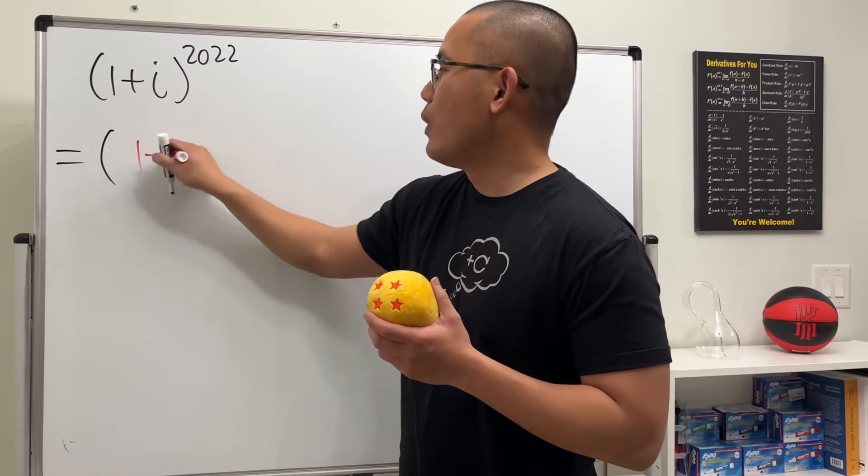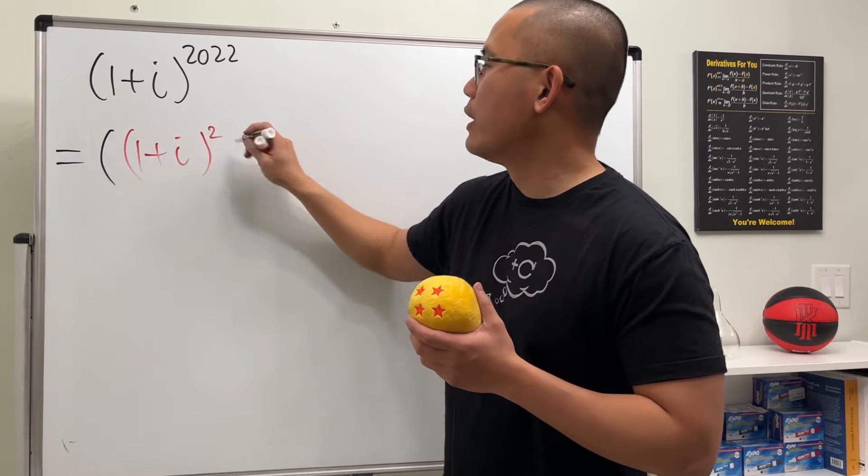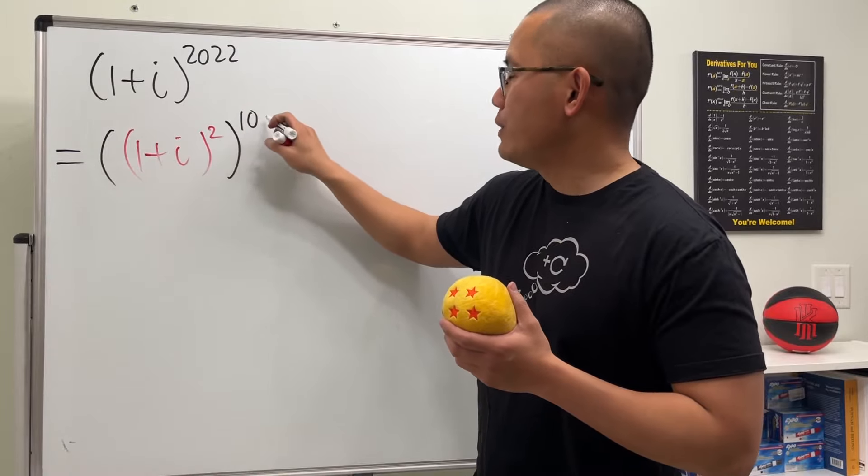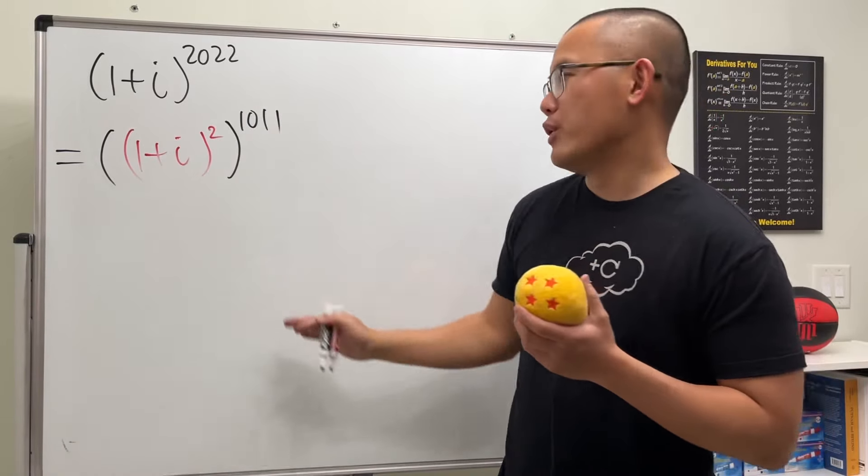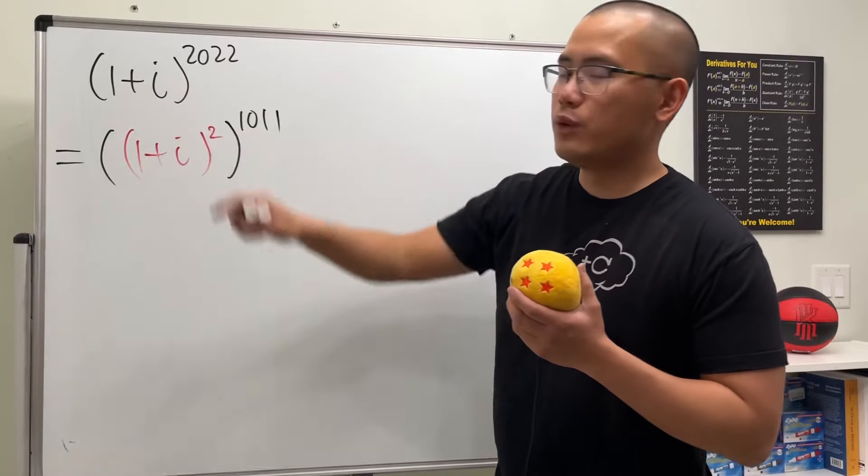Firstly, we are going to see that this is the same as 1 plus i raised to the second power, and then raised to the 1011. Well, not binary, okay? Yeah, this power, because you can see that this times that will give you 2022.